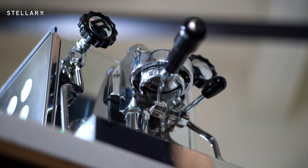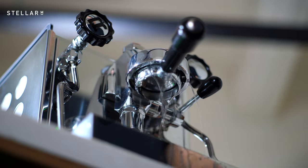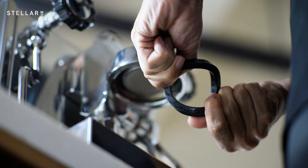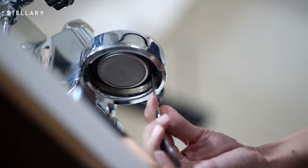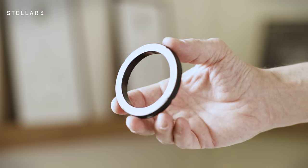And the group head starts leaking. If the gasket feels hard and non-pliable to the touch, or when you press against it with a teaspoon, the rubber has become vulcanized and it's time to change it.